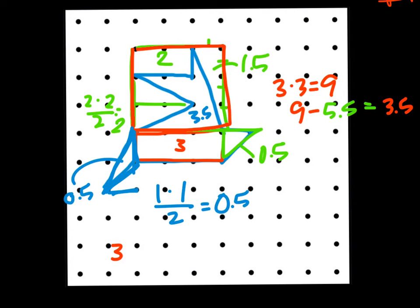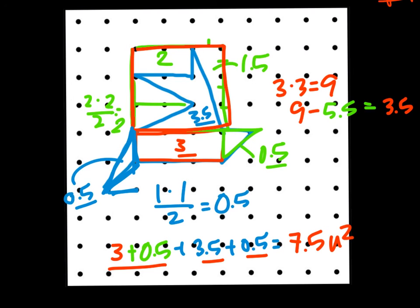So now I just need to add up all these different spaces. I have my initial rectangle, that 3. I used this other triangle, 0.5. We also have this blue funky shape, which was 3.5 squared units. And we have our last triangle, which was 0.5. So our total area: 3 plus 0.5 equals 3.5, plus another 3.5 is 7, plus another half is 7.5 units squared.